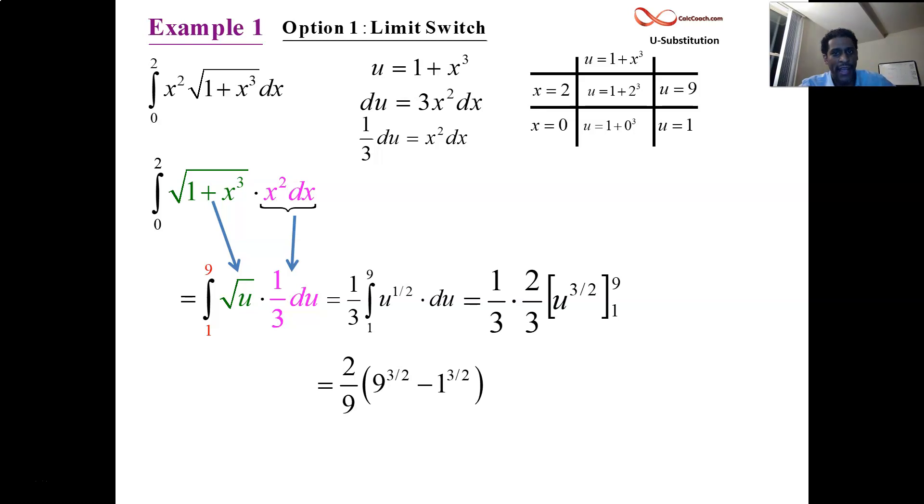What does it mean to raise something to the 3 halves? Anything to the 3 halves is that guy rad that guy. So 9 to the 3 halves is 9 rad 9. 1 to any power is just a 1. What is 9 rad 9? That's a 27, because it's 9 times 3. 27 minus 1, that's a 26. Double 26, that's a 52. Final answer, 52 over 9.